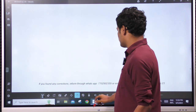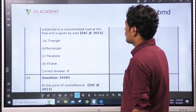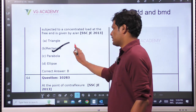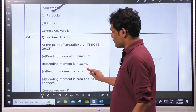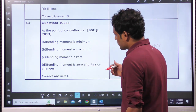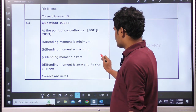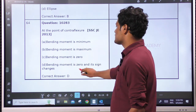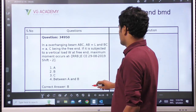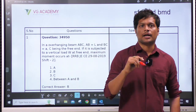At the point of contraflexure the bending moment changes its sign — it is 0 and changes sign — option D. That is all about questions from SSC JE. Now we will solve questions from RRB JE as well.